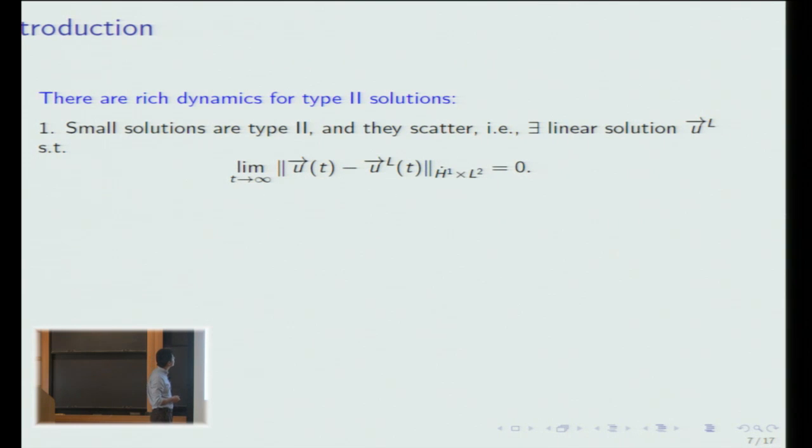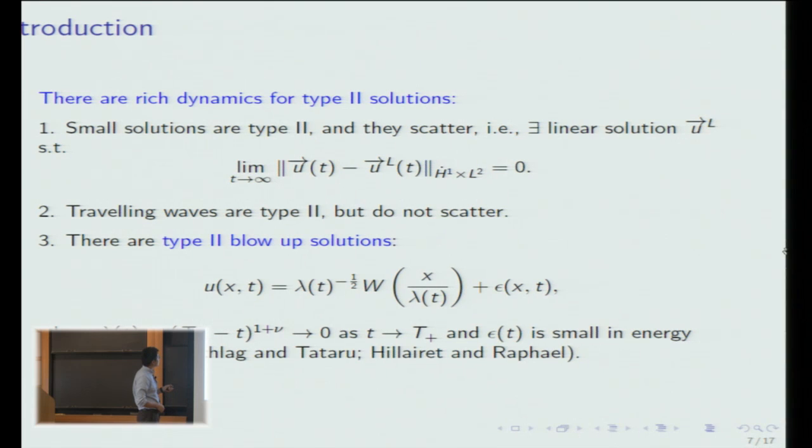So there are rich dynamics for type two solutions. For example, if you take a solution which is sufficiently small, although it's a nonlinear solution, eventually it becomes linear in the sense that it asymptotically approaches a linear solution. So that's what we call scatter. The nonlinear solution asymptotically gets asymptotically close to a linear solution. That's the scattering concept. And then you have traveling waves. These solutions are also type two, but they do not scatter. These traveling waves, they do not decay to zero everywhere. So these are not scattering behavior. And then the other behavior is the blow up solutions. So the solution could blow up by concentrating the energy into smaller and smaller regions. So it rescales itself so that it concentrates energy in infinitesimally small region in infinite time. In that case, we call it the blow up.